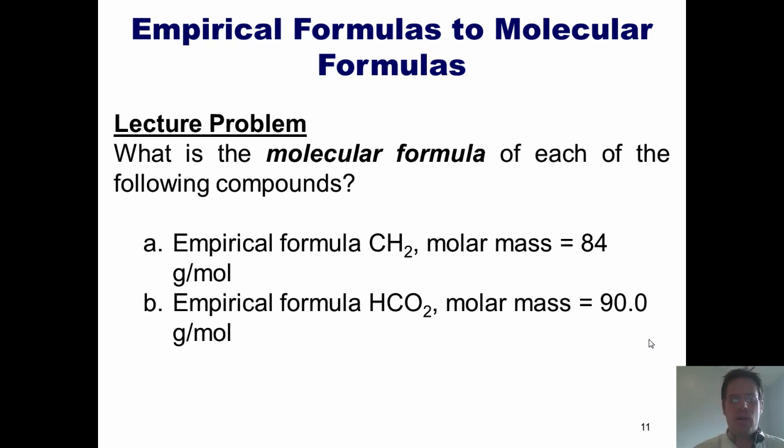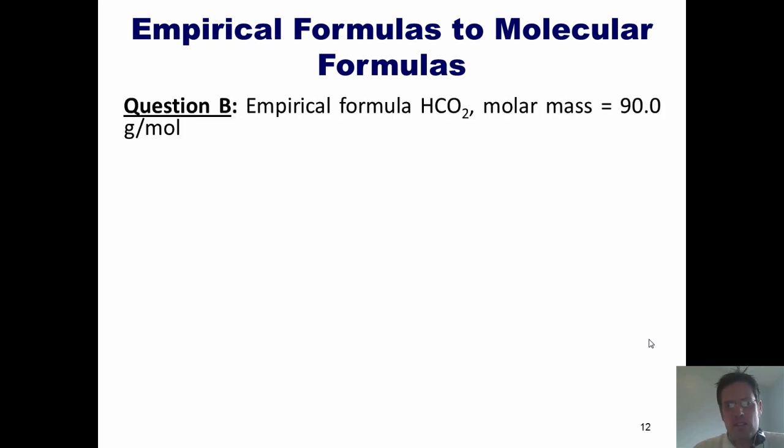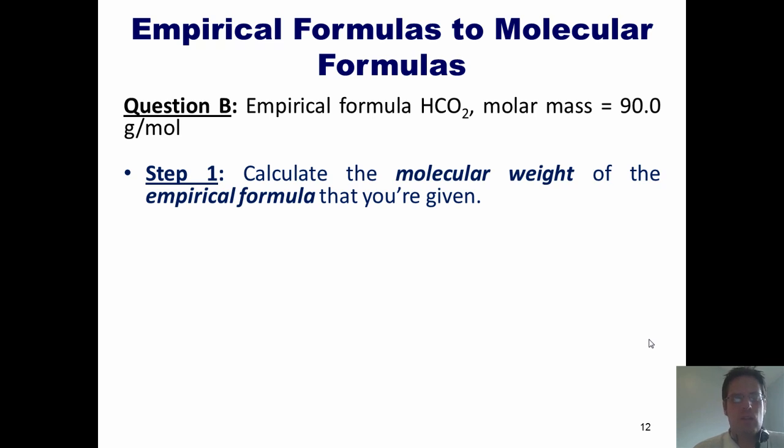But I will do part B as follows. Remember, step one. Calculate the molecular weight of the empirical formula we're given. Our empirical formula is HCO2. What is its molecular weight? Well, hydrogen weighs 1, carbon weighs 12, and O2 weighs 32, because each oxygen weighs 16, and there are two of them. 1 plus 12 plus 32 equals 45.